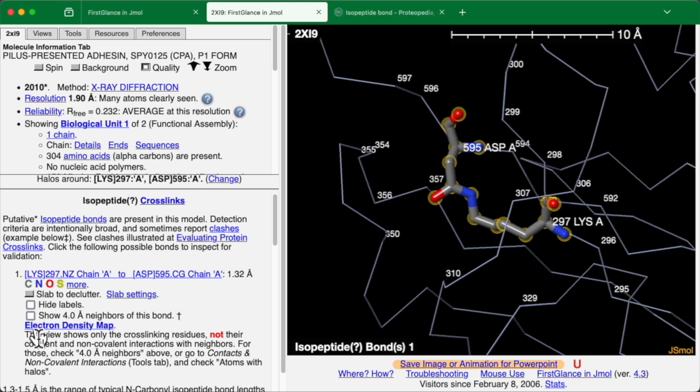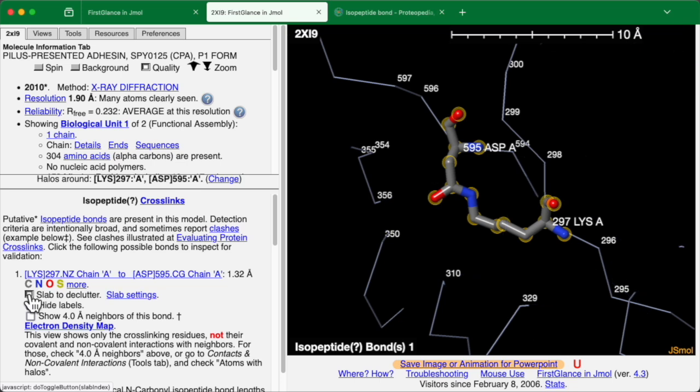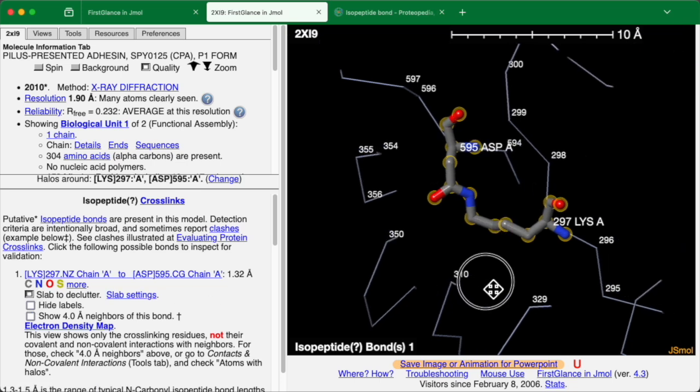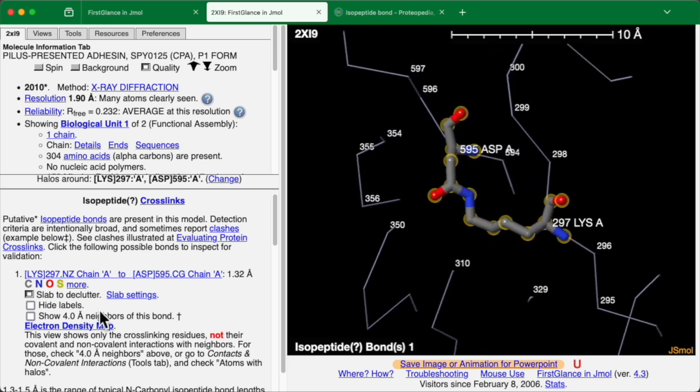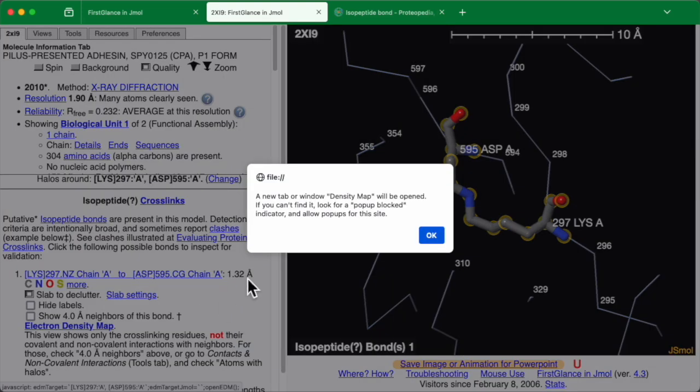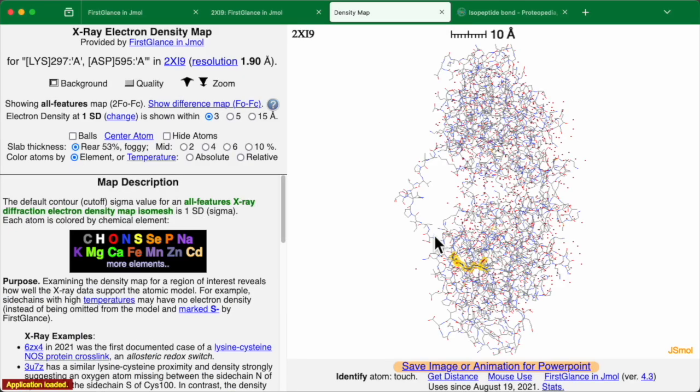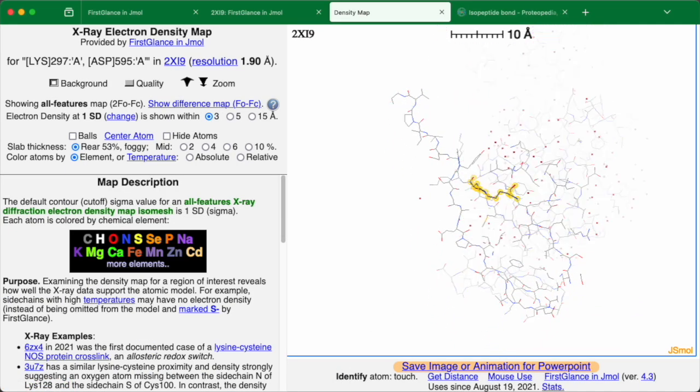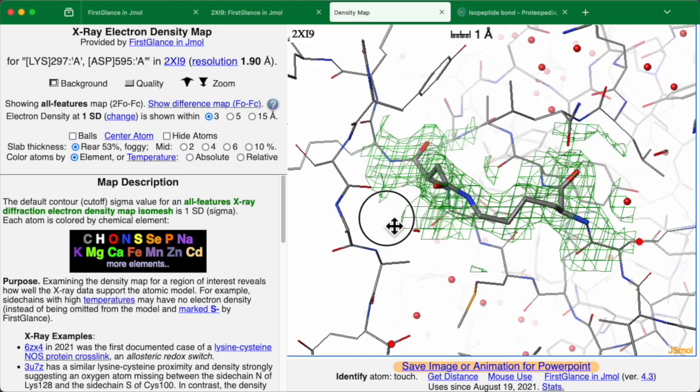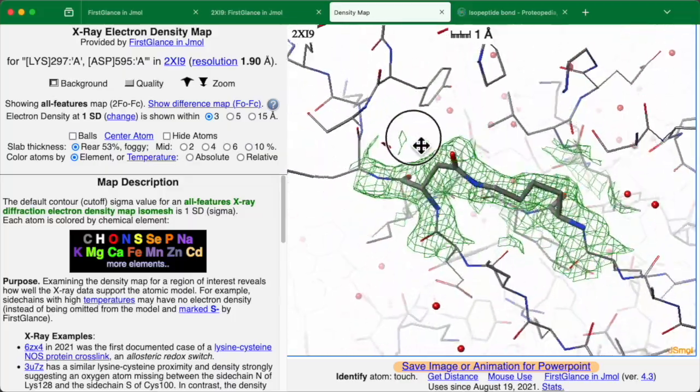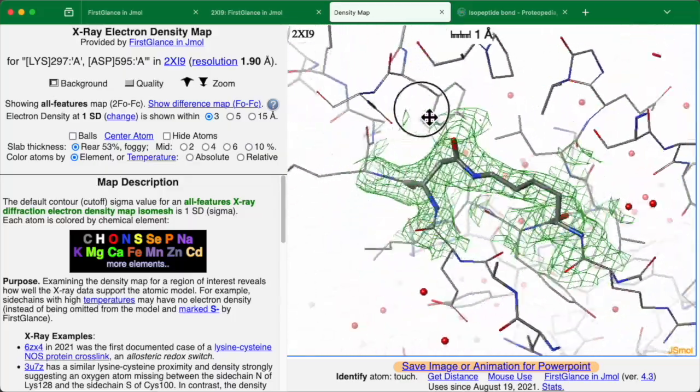Well, over here we have a number of convenience tools, one of which, by the way, is to turn on slab, which hides things that are in front of and behind this bond, making it a little easier to see. But the most important one for validation is to look at the electron density map. You simply click on that link and it alerts you that this will appear in a new tab or browser window. You see the isopeptide bond. It zooms in on it and then shows you the electron density isomesh or map around the atoms of interest.